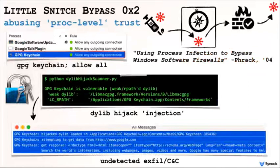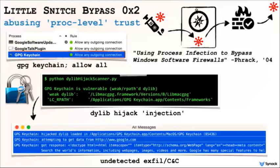Another way to bypass Little Snitch is by abusing its process-level trust. Little Snitch, in terms of granularity, assigns trust at the process level. This means if a process is allowed to talk to the internet, any code, threads, or dynamic libraries within that process can talk to the internet as well. So if we can find any way to inject malicious code into any of the processes that Little Snitch trusts, we can connect out without the user being alerted. For example, on my box, GPG Keychain is allowed to talk to the internet. Fortunately, GPG Keychain is vulnerable to a dylib hijack attack — we can plant a malicious dynamic library on the file system, and every time this application is started, the dynamic library will be loaded automatically by the OS loader into the process context of this trusted application. At that point, we can connect out. Little Snitch will see this connection, but since it conforms to a rule, it will allow it without alerting the user.